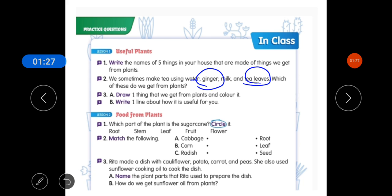Third question A part is draw one thing that we get from plants and colour it. So you have to draw one thing that we get from plants and colour it. Like we get food plant or medicines plant, or we get wood from plants. We get wood from plants and you have to colour it.